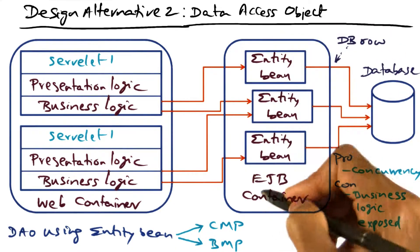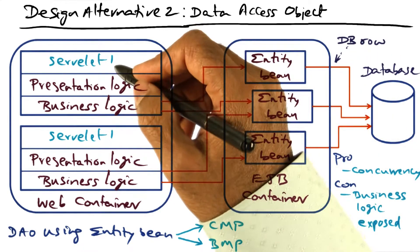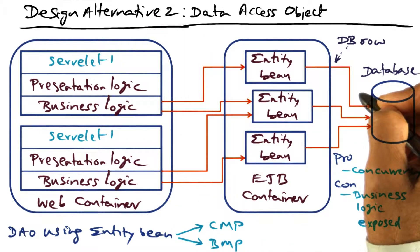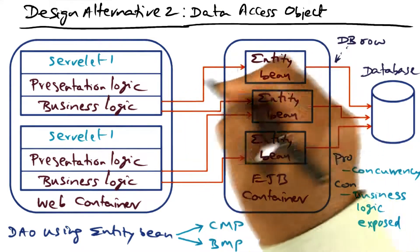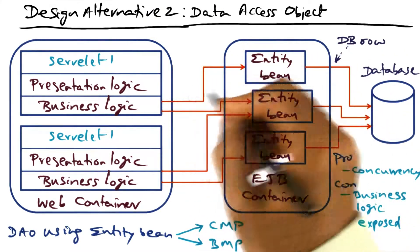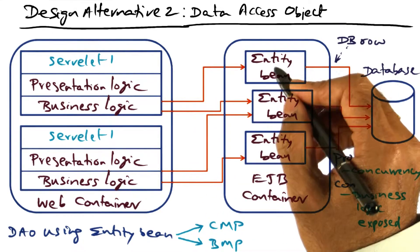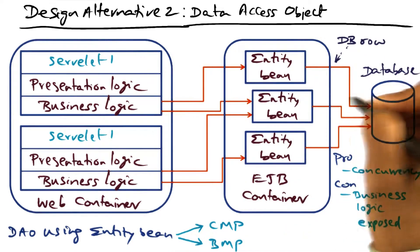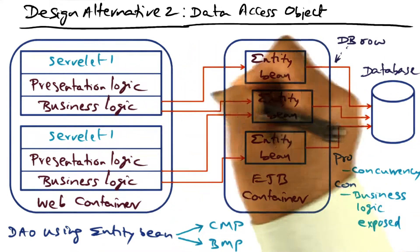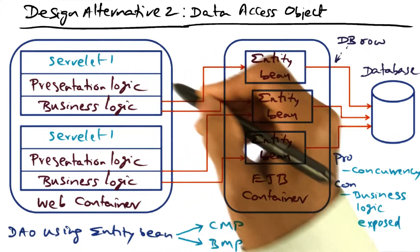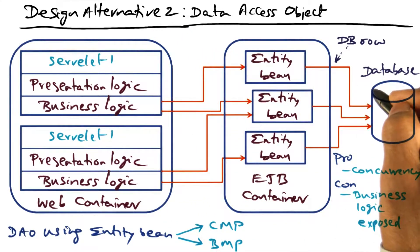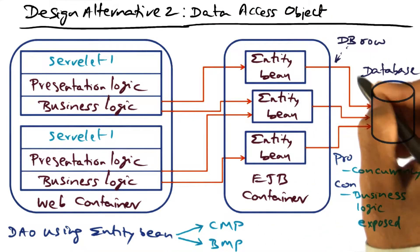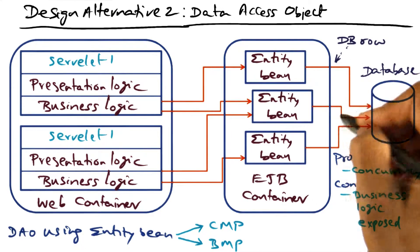The EJB container now contains these entity beans. So if a servlet serving a particular client needs to access some portion of the database, it can farm out parallel requests to as many entity beans as it wants. All of those entity beans can work in parallel on behalf of a single client, pulling in the needed data and serving it up to the business logic. This reduces the time for data access by exploiting available concurrency in IO performance.